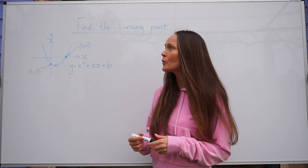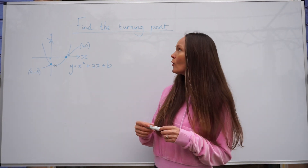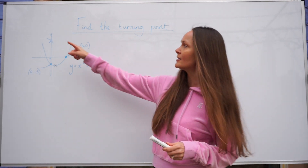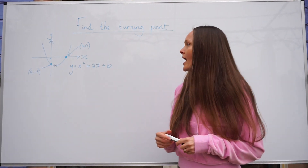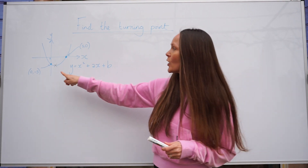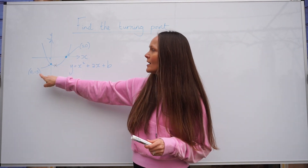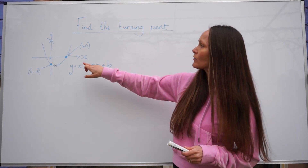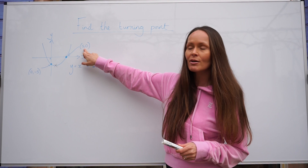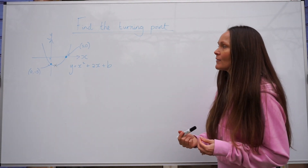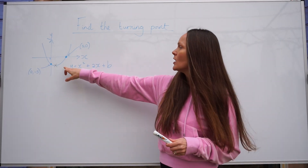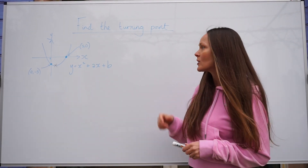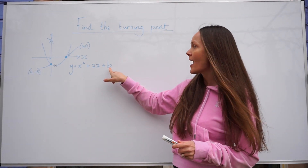In this video I'm going to show you how to find the coordinates of a turning point. In this example we've been given the sketch of a curve and also two points on that curve. We know where the curve crosses the y-axis — it crosses at (0, -5) — and we also know where it crosses the x-axis at (5, 0). We've also been given the equation of this curve: y equals x squared plus ax plus b. It's not really complete because we don't know what the values a and b are.